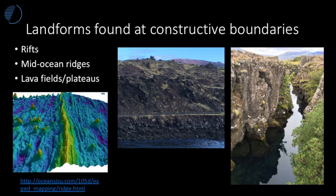At depth you see seamounts close to the ridge — these are mountains underneath the sea. You also see the mid-ocean ridge itself; we already mentioned the Mid-Atlantic Ridge, but there's also the Mid-Indian Rise and the East Pacific Rise. We find large volumes of lava produced at these junctions — here is a large lava flow produced on the island of Surtsey, which is an island that breached the surface of the sea close to Iceland.